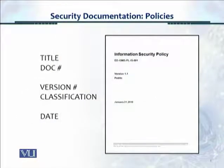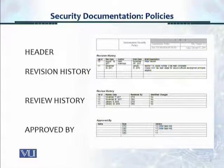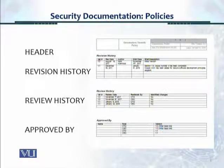This is a sample front page layout of a security policy — in particular an information security policy. It has a title, a documentation number, a version number for version control, and a classification — in this case it's public. There's also a date on which the document was issued. On the control page there's a header with the title, classification, document version number, document number, and date. There is also a revision history showing who changed the document and what changes were made, a review history showing who reviewed the document, and an approval section showing who approved it and when.